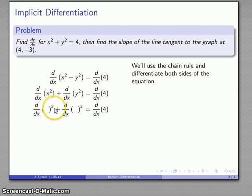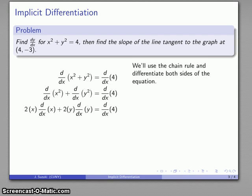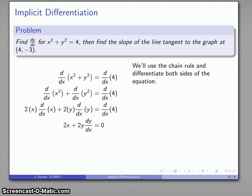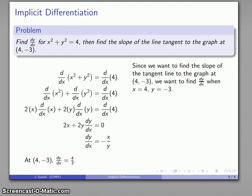Applying the chain rule gives 2x dx plus 2y dy equals the derivative of 4. The derivative of x with respect to x is 1, the derivative of y is dy/dx, and the derivative of a constant is 0. So I have an equation relating dy/dx, and I can solve for it algebraically. This tells me dy/dx equals negative x over y. At the specific point, I substitute x and y values: dy/dx equals negative 4 over negative 3, which equals 4/3 — that's the slope of the tangent line to the circle at that point.